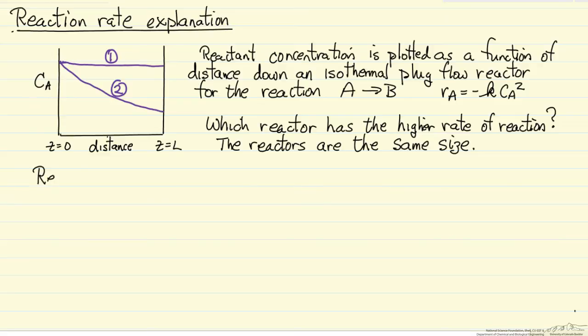So reactor 1 has the highest rate of reaction, and that's because the rate of reaction, minus KCA squared, or if you like, the rate that we're forming the product B is KCA squared. So this is the rate per volume. It's normally defined in kinetics reactor design textbooks.